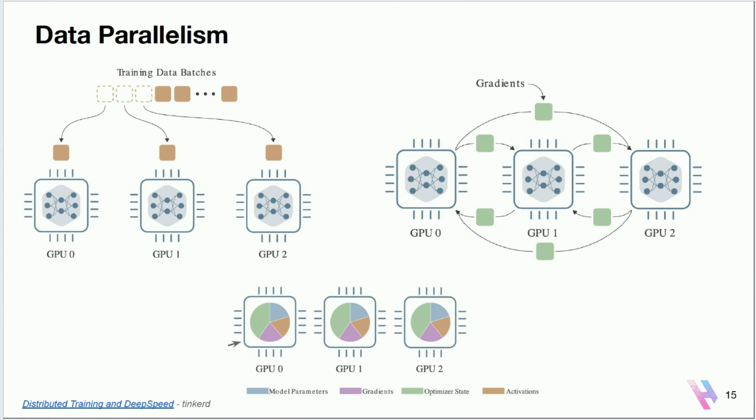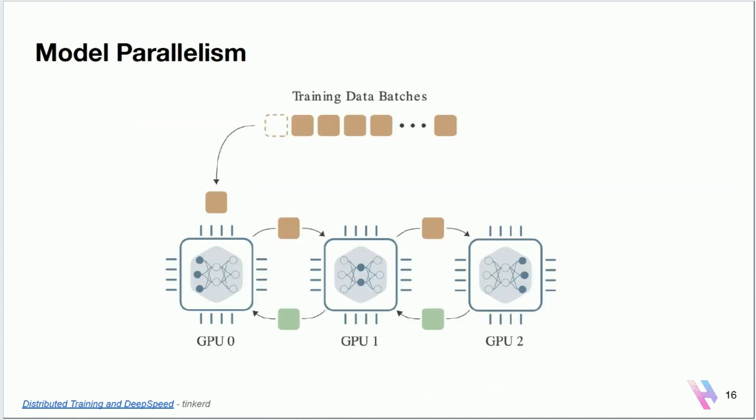But what if you cannot fit your entire model on a single GPU? Then you have to use model parallelism. The idea behind model parallelism is that if I have three different GPUs I can split my model across them. In this diagram, the first layer of the model is in GPU 0, the second in GPU 1, and the third in GPU 2 — this is a naive implementation of pipeline parallelism. As you train your model, the data flows from the first GPU to the last GPU, and during the backward pass it goes back again.